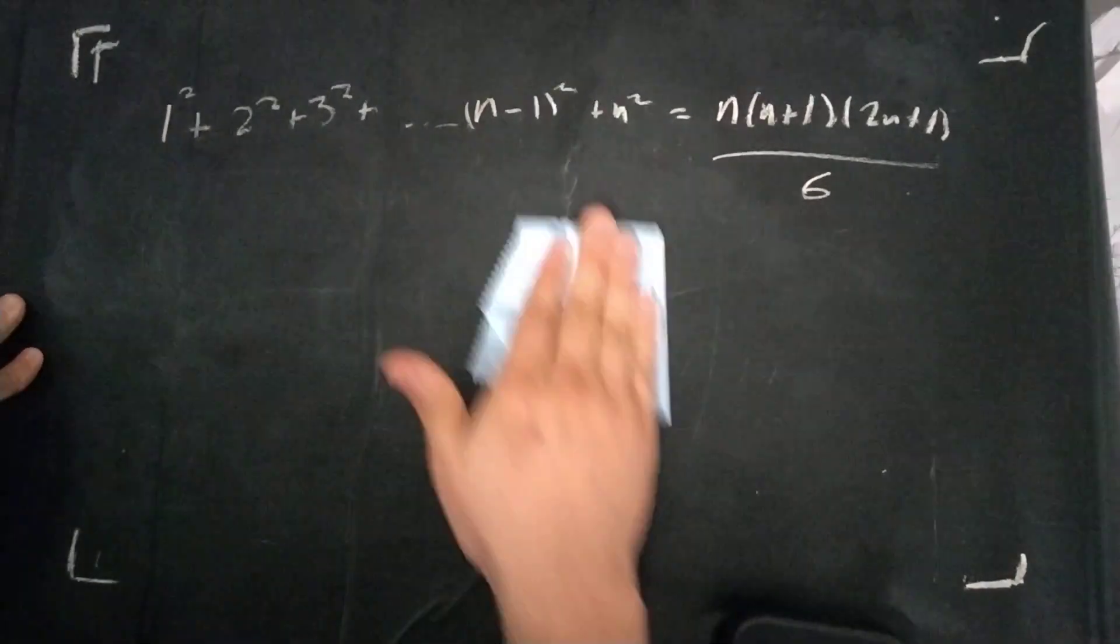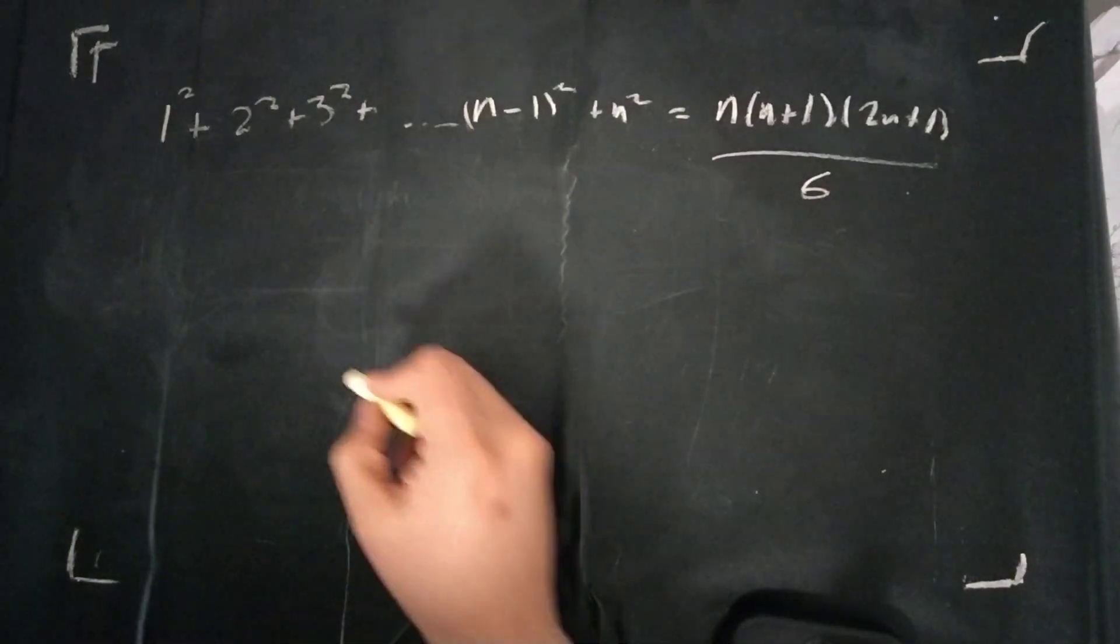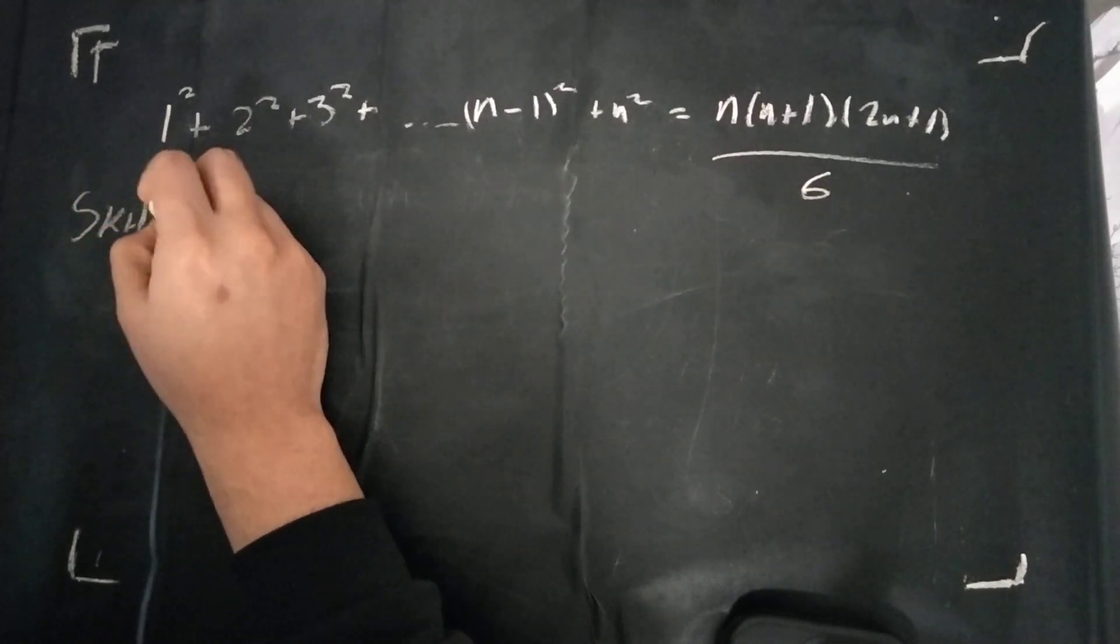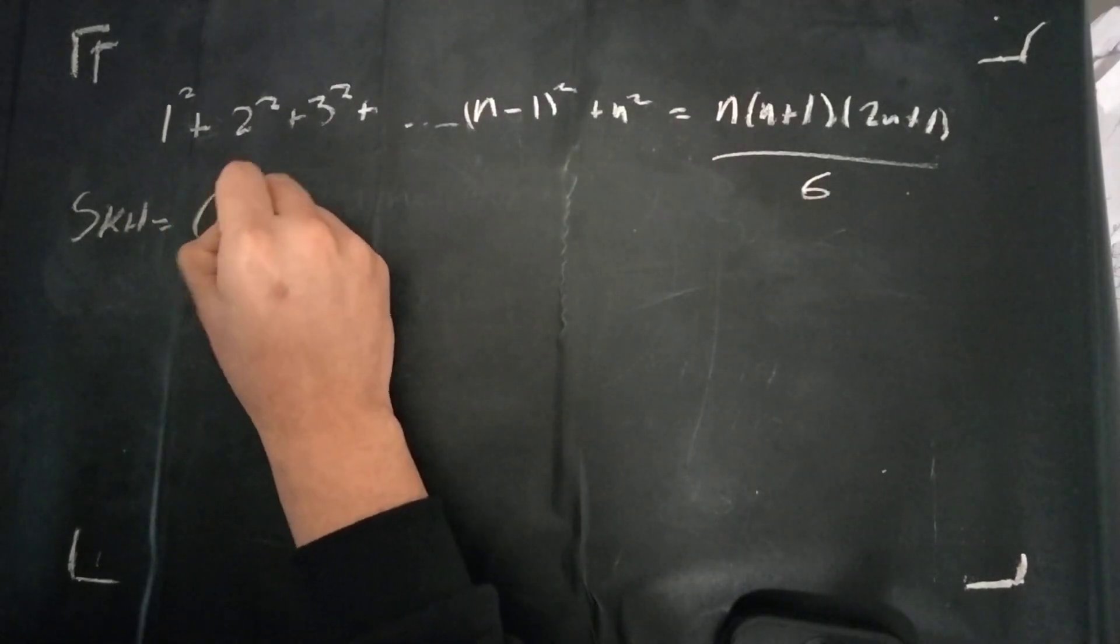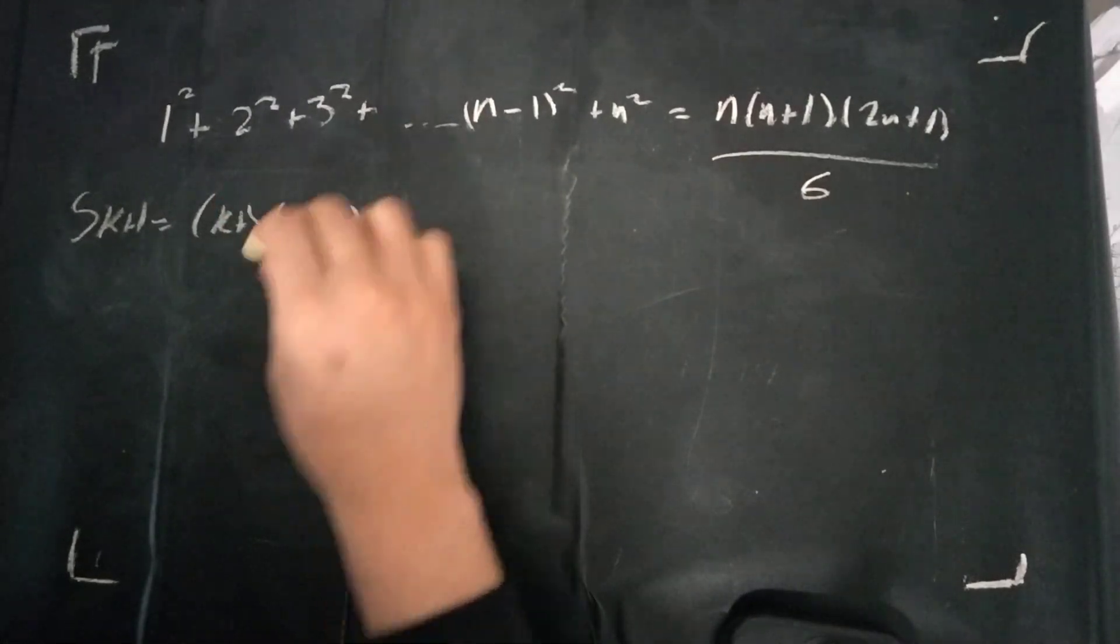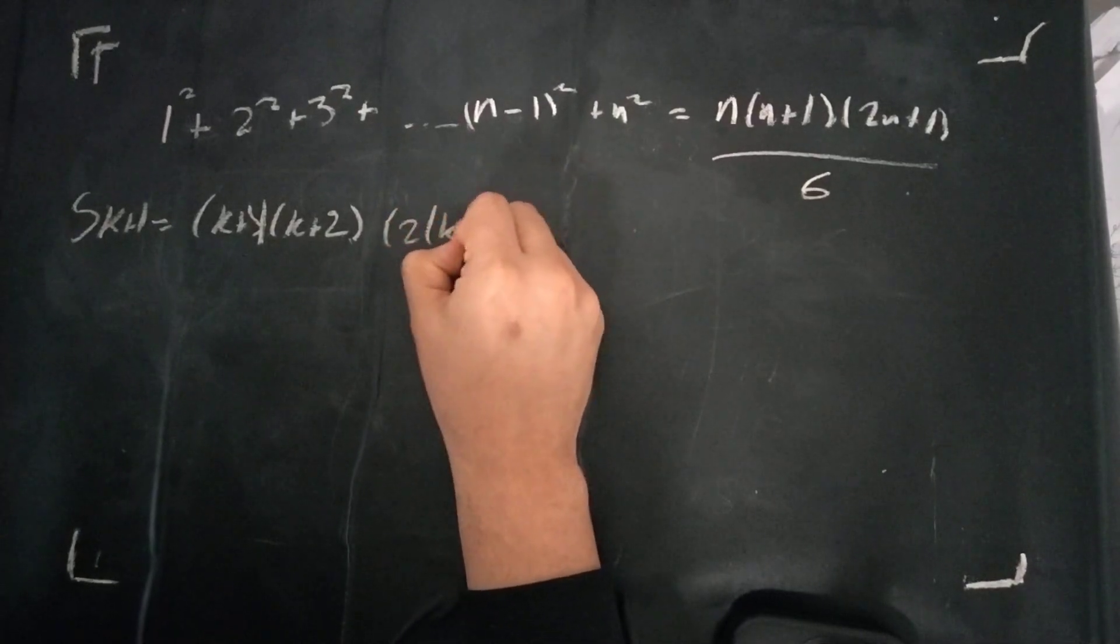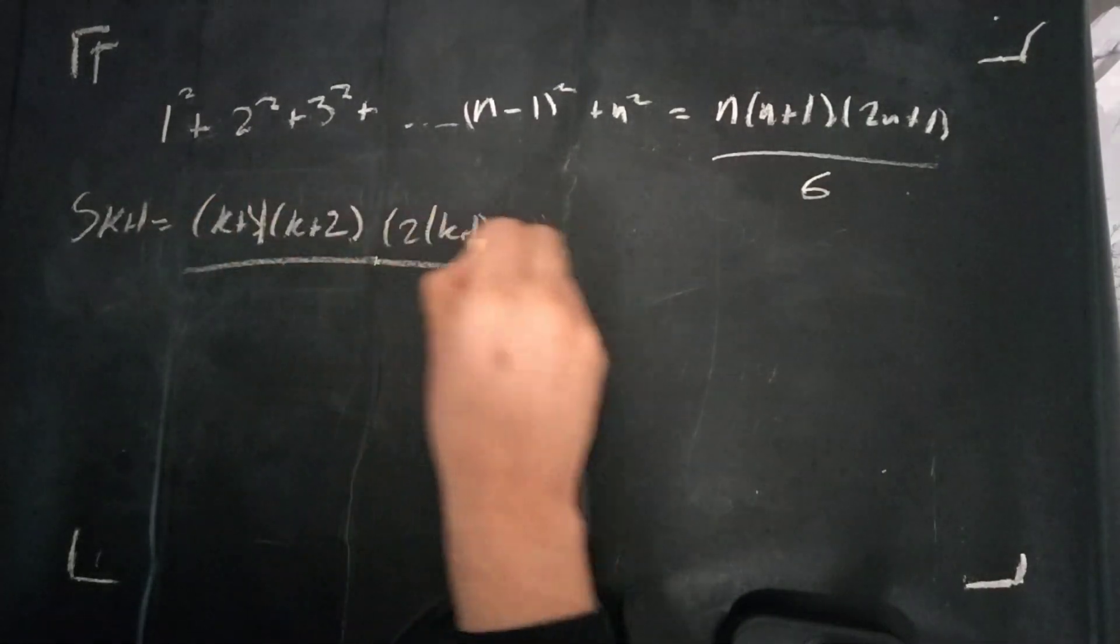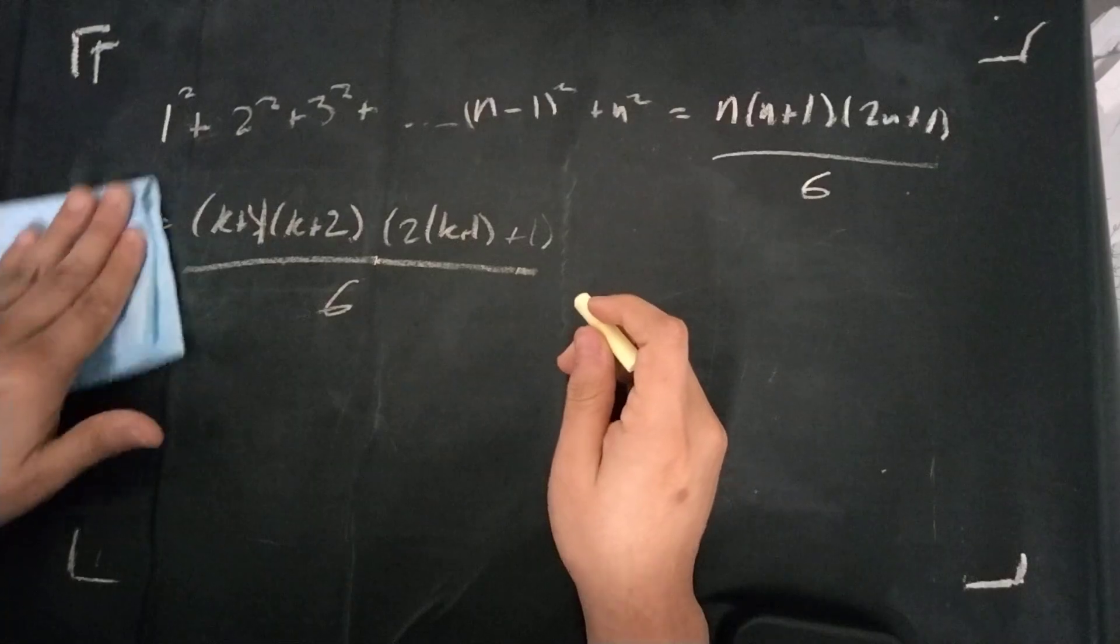Now, hopefully that was up there for long enough. Now for the inductive step. Now we need to show that s of k+1 is equal to (k+1)(k+2)(2k+1+1)/6. So we need to do this. We need to show that this is the case.